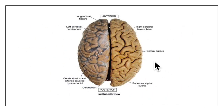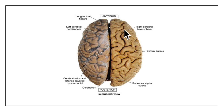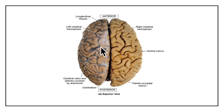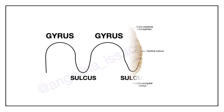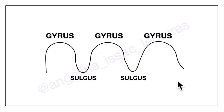Now let's look at the features of the cerebrum. This diagram shows the superior view of the cerebrum. It is made up of two cerebral hemispheres — the left and right — which are completely separated from each other by the medial longitudinal fissure. The two hemispheres are connected to each other by the corpus callosum, and each hemisphere contains a cavity called the lateral ventricle.